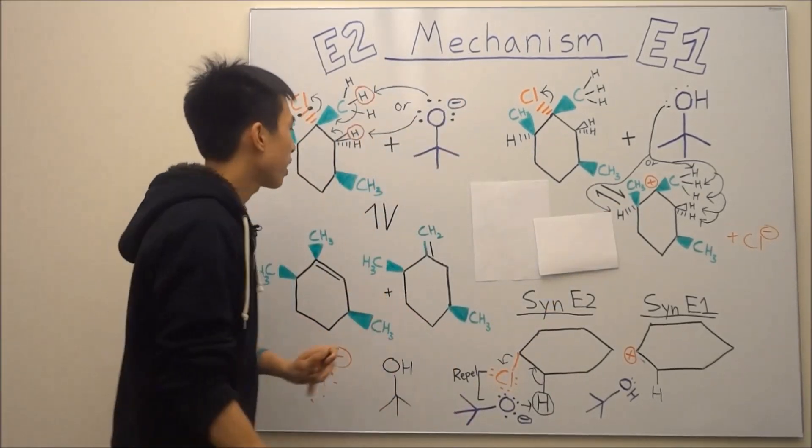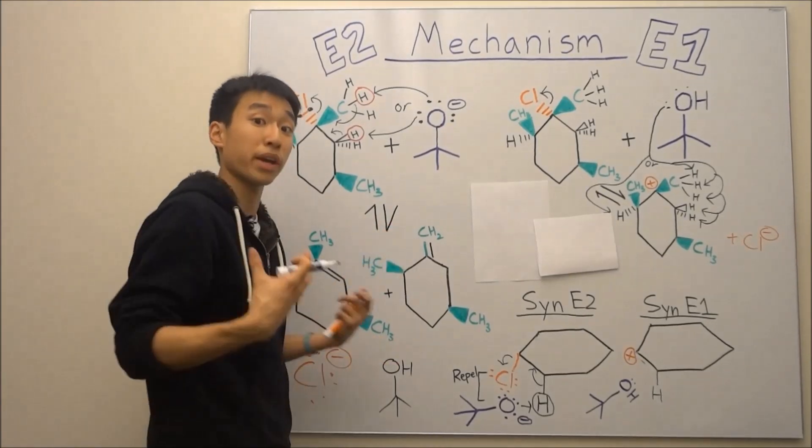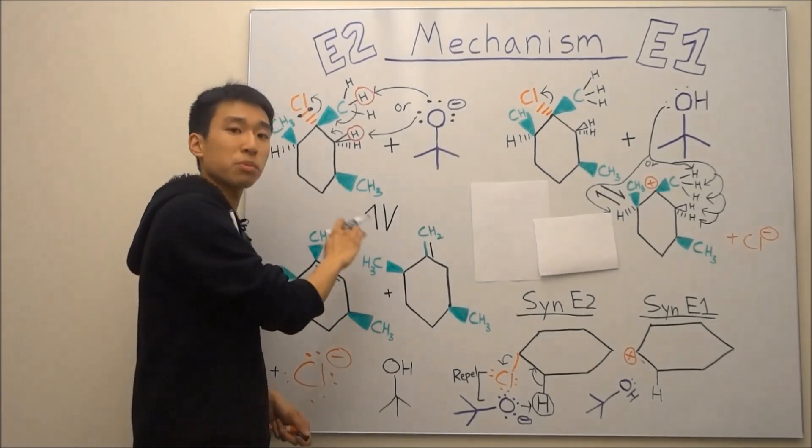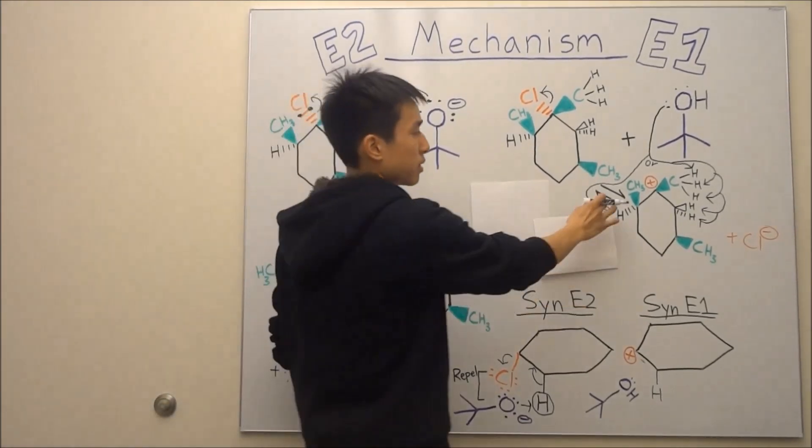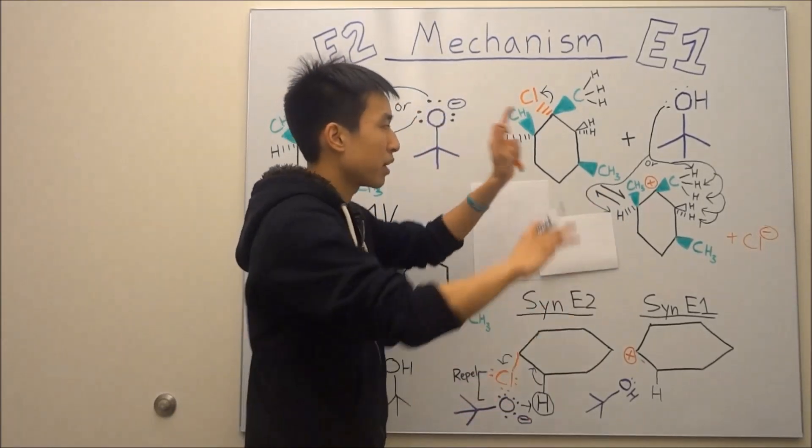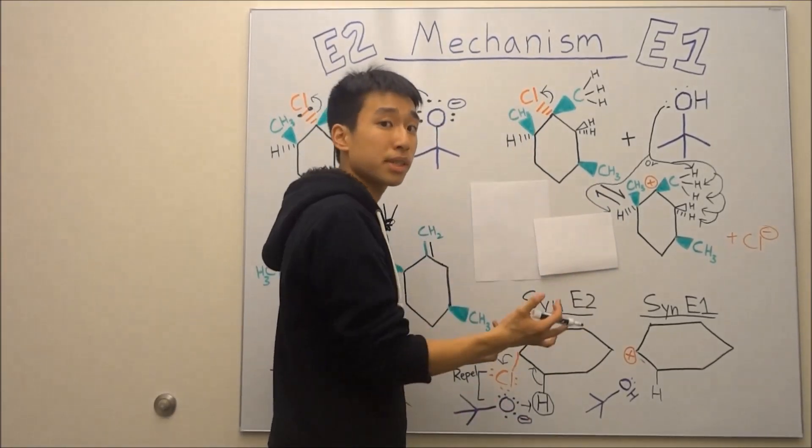And sorry, one more thing. I forgot to draw equilibrium arrows. Make sure you draw these when you do your mechanism. For each step, you must have these equilibrium arrows. That's why I have them here. But anyway, you grab your hydrogens. There's so many possibilities now.